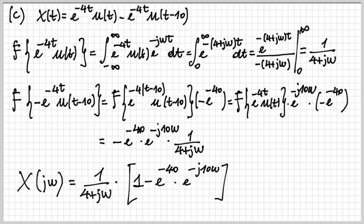The final result, by summing the two terms, is 1/(4 + jω) times the term in square brackets. In this video we have solved a few more useful exercises on the Fourier transform. I recommend watching the other exercise videos as well as my theory classes to better understand the fundamentals. Subscribe to this channel and you'll be the first to know when I upload something new — see you in the next class!